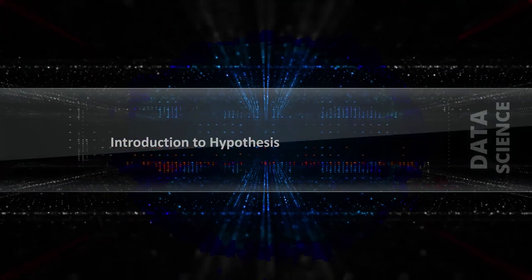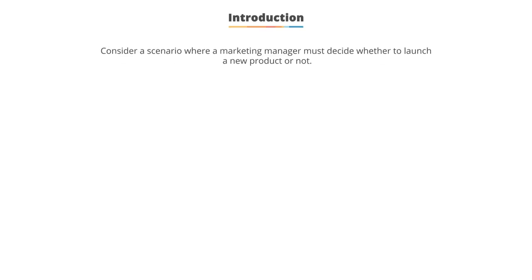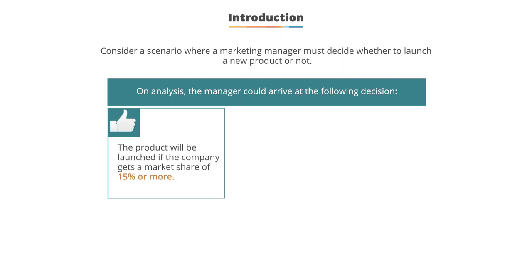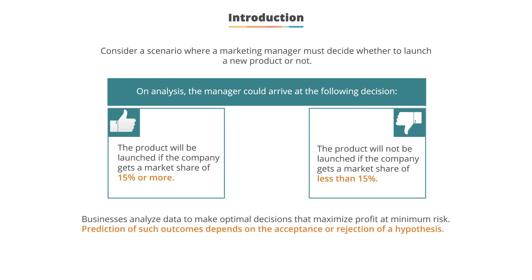Let's consider a scenario where a marketing manager must decide whether to launch a new product or not. On analysis, the manager could arrive at the following decision: the product will be launched if the company gets a market share of 15% or more, or the product will not be launched if the company gets a market share of less than 15%. Businesses analyze data to make optimal decisions in order to maximize profit and minimize risk, and predictions of these outcomes depend on the acceptance or rejection of a hypothesis.